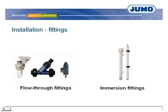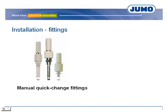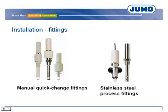Immersion fittings are mounted into open channels or tanks, shielding the electrode from breakage, with measurements possible at different depths. Manual quick-change fittings are used for pH measurement in closed circuits or in the inflow or outflow of wastewater systems; they can also be laterally installed in tanks so the sensor can be removed without emptying the tank. Process fittings made of stainless steel can be installed directly into stainless steel pipe systems or tank walls, mainly in procedural plants with increased hygienic requirements.